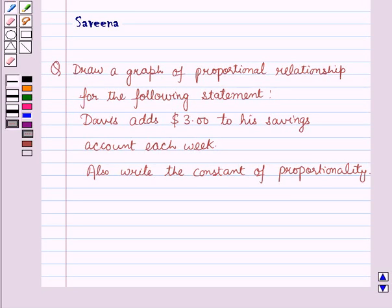Hello and welcome to the session. In this session, we will discuss a question which says: Draw a graph of proportional relationship for the following statement. The statement is: Davis adds 3 dollars to his savings account each week. Also write the constant of proportionality.